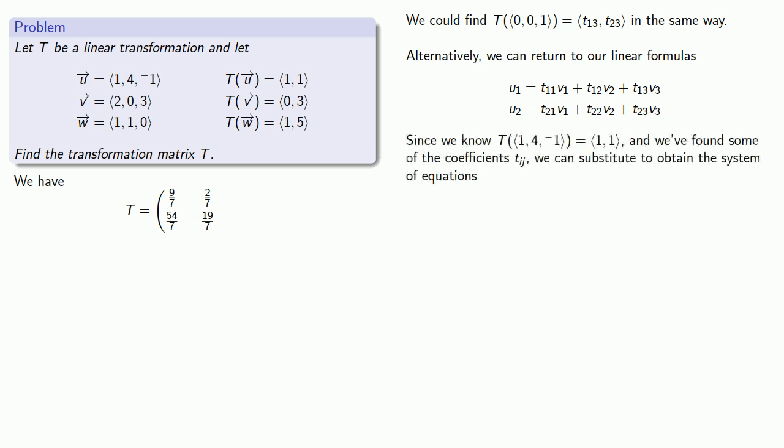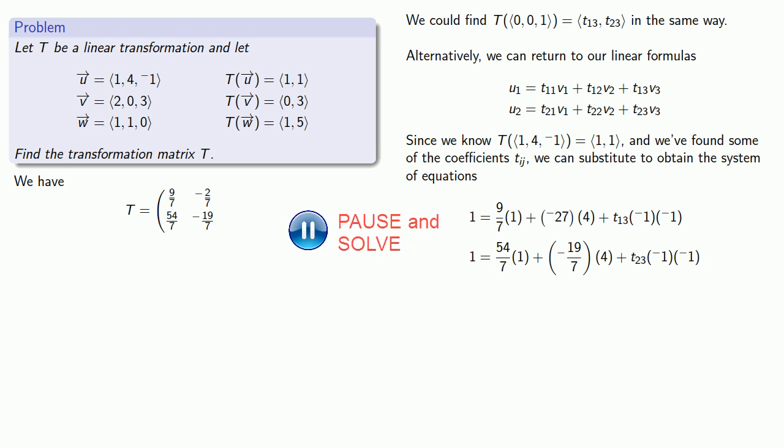So for example, we know the transformation applied to (1, 4, -1) gives us the vector (1, 1), and we know the four coefficients t11 through t22. So we can substitute in our values and get an equation in t13 and in t23, which we can solve to find those last two coefficients and our transformation matrix.